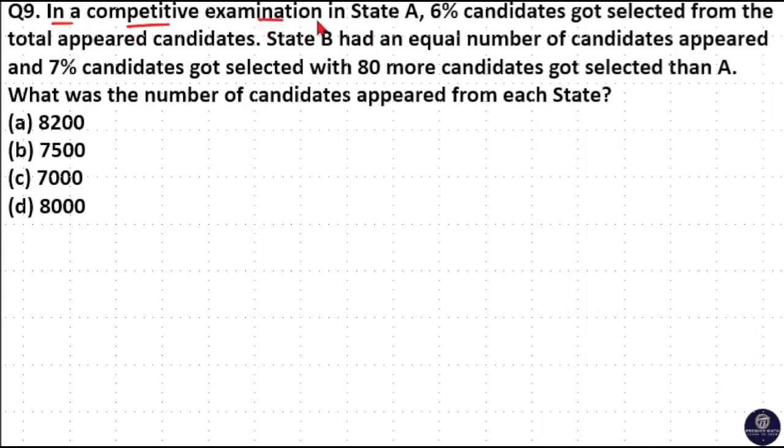In a competitive examination in State A, 6% candidates got selected from total appeared candidates. State B had an equal number of candidates appeared and 7% candidates got selected with 80 more candidates got selected than A. What was the number of candidates appeared from each state?